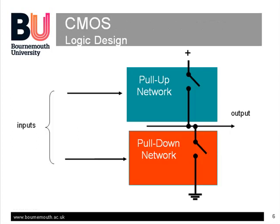This slide shows the principle behind one means of building static logic circuits using CMOS. The circuit is split into two complementary halves. The top part is made of PMOS transistors and its job is to connect the output up to the positive supply rail to give a logic high output when the inputs are in the required combination. The bottom part is made up from NMOS transistors, and its job is to pull the output down to the negative supply rail to give a logic low when the inputs are in the required combination. To do this without overlap requires that the top circuit is complementary to the bottom circuit.